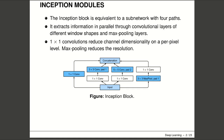The basic convolutional block in GoogleNet is named the Inception block. As depicted in the figure, the Inception block consists of four parallel paths. The first three paths use convolutional layers with window sizes of 1x1, 3x3, and 5x5 to extract information from different spatial sizes. The middle two paths perform a 1x1 convolution on the input to reduce the number of channels, reducing model complexity. The first path uses a 3x3 max pooling layer followed by a 1x1 convolutional layer to change the number of channels. Finally, the output of each path is concatenated along the channel dimension and comprises the block output.